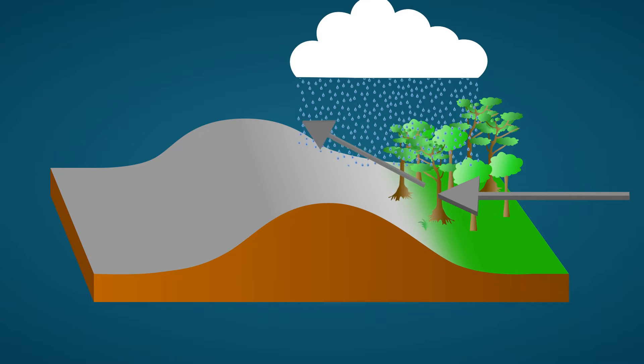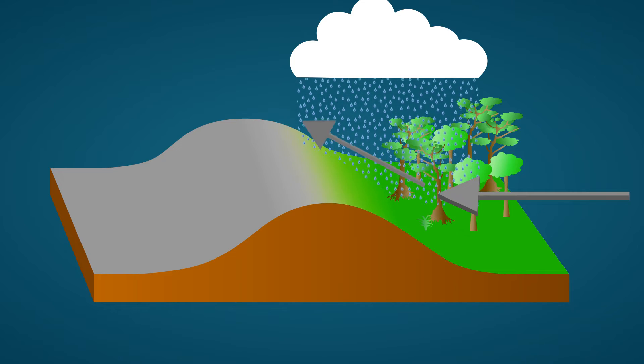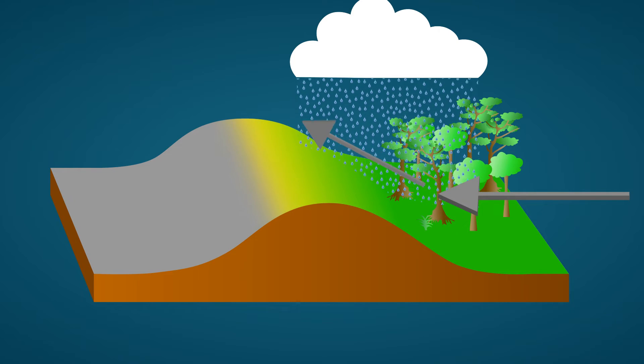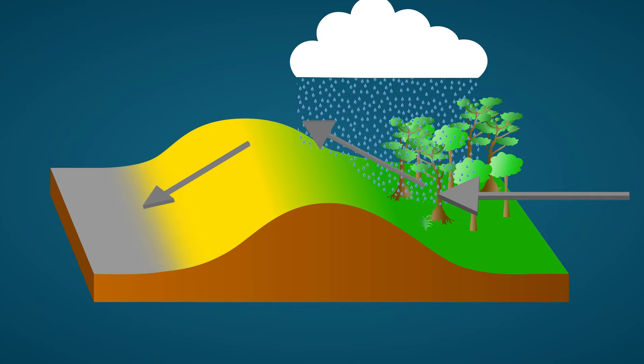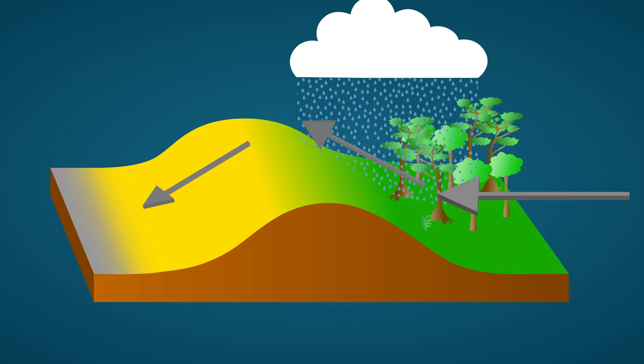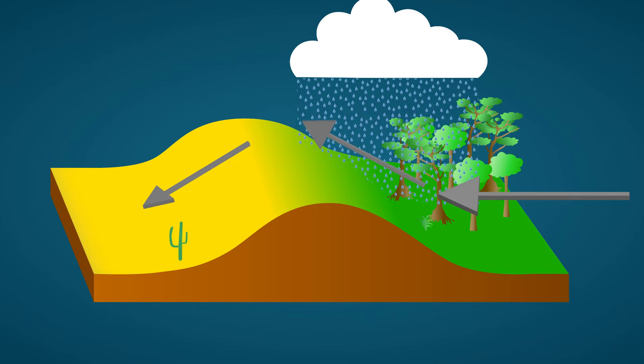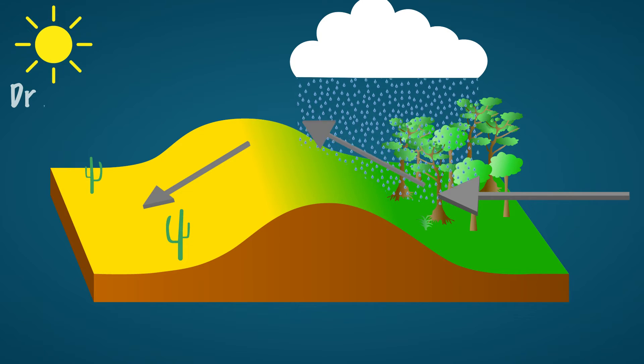By the time the air is on top of the mountain all the water vapor has condensed. As the air descends on the other side of the mountain it moves closer to the earth's surface and thus the air will warm up. As a result no condensation takes place and it will therefore generally be dry and sunny.